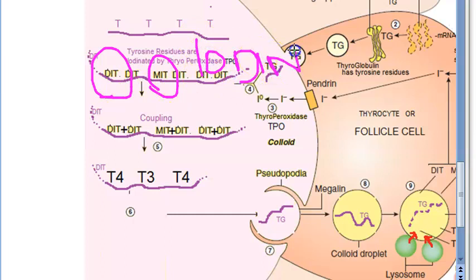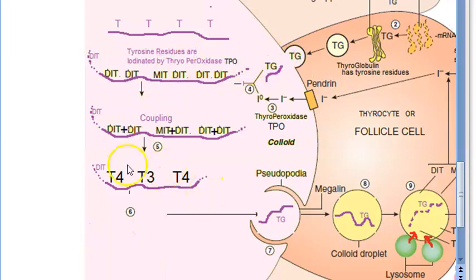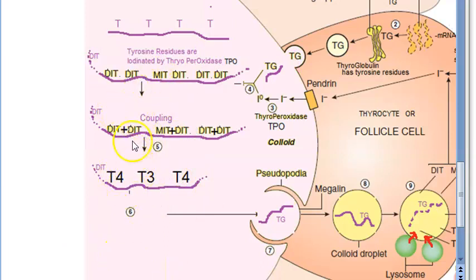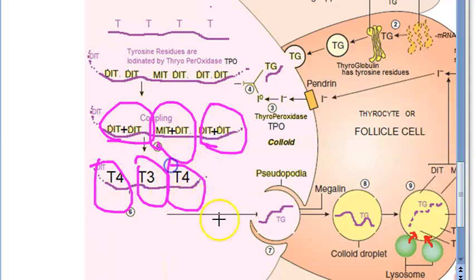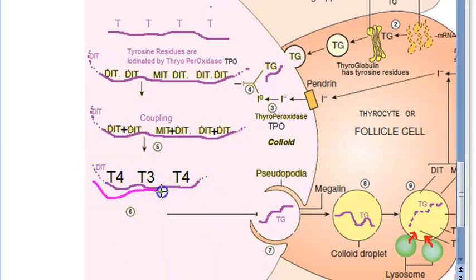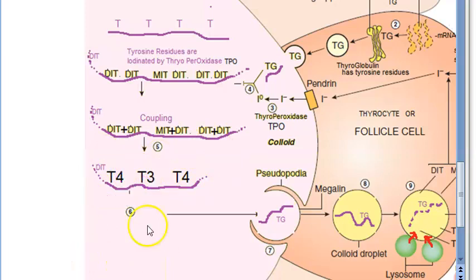The next step is coupling. The iodinated residues join together: DIT + DIT couple to give T4 (thyroxine), and MIT + DIT couple to give T3 (triiodothyronine). After coupling, the thyroglobulin molecule now contains T3 and T4 — the hormones are ready.